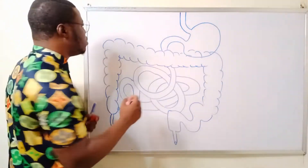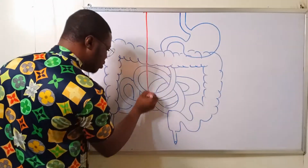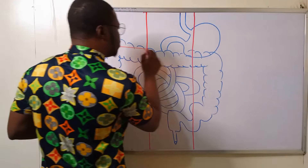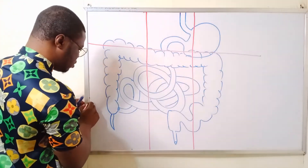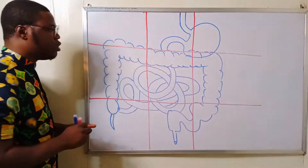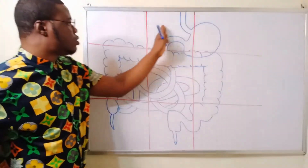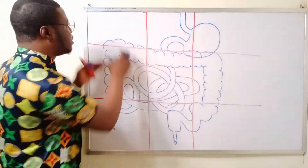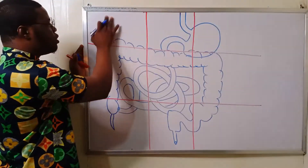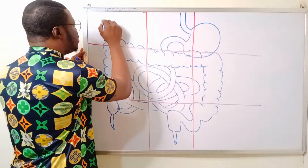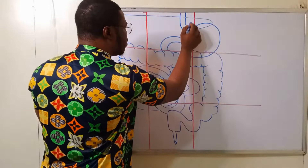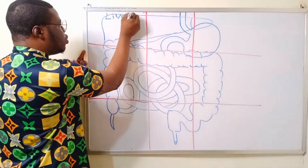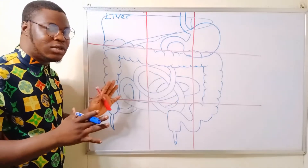We have our nine regions mapped out. In the right hypochondriac region, we have an accessory organ of the GIT called the liver. So your liver is located in the right hypochondriac region.